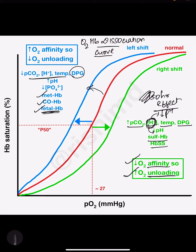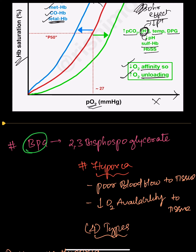When plotting the oxyhemoglobin dissociation curve, the x-axis represents the partial pressure of oxygen and the y-axis represents hemoglobin saturation. DPG or BPG — both terms refer to 2,3-bisphosphoglycerate — is an important metabolic product formed in red blood cell metabolism, present at different concentrations in different metabolic conditions in our body.